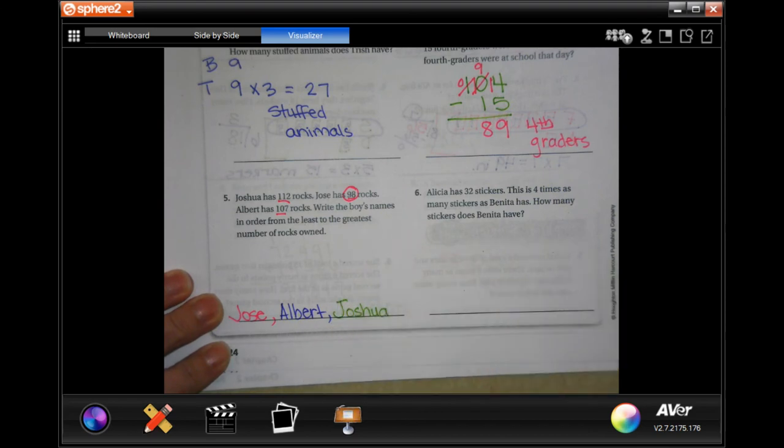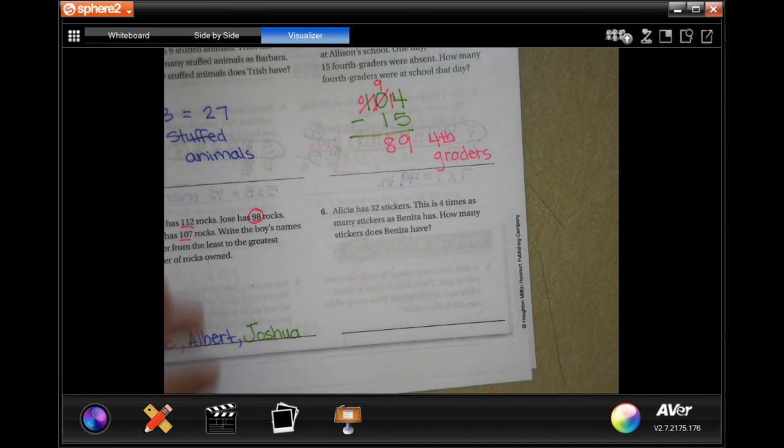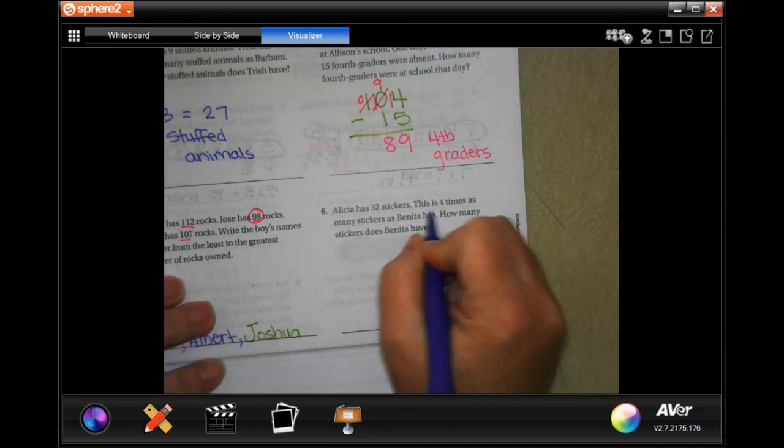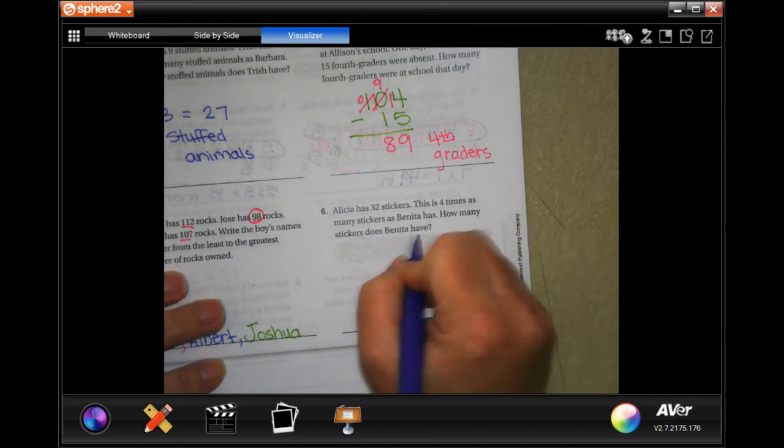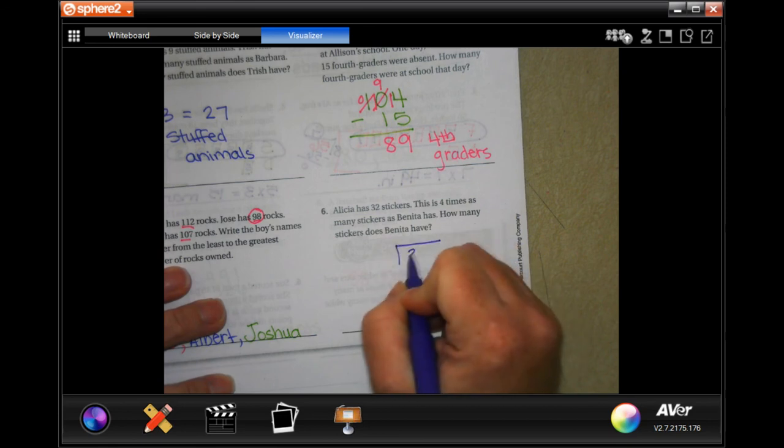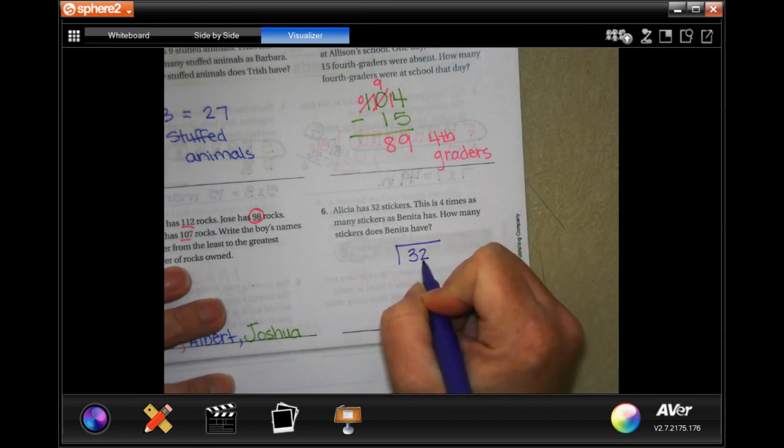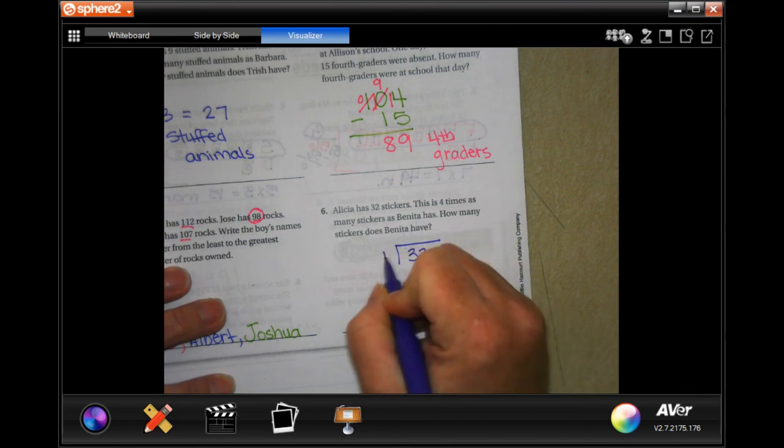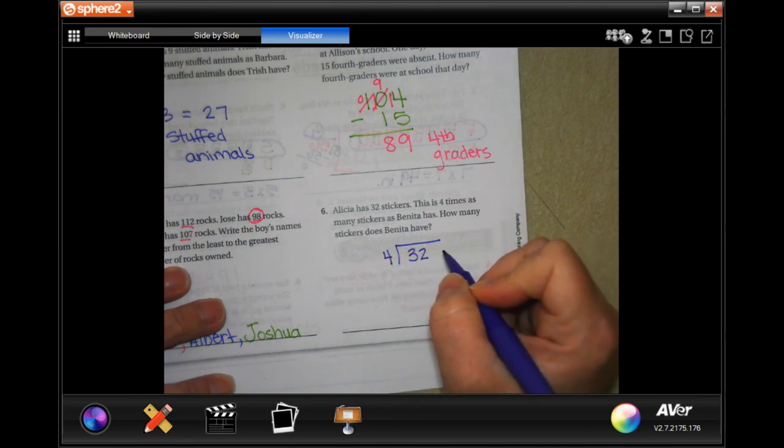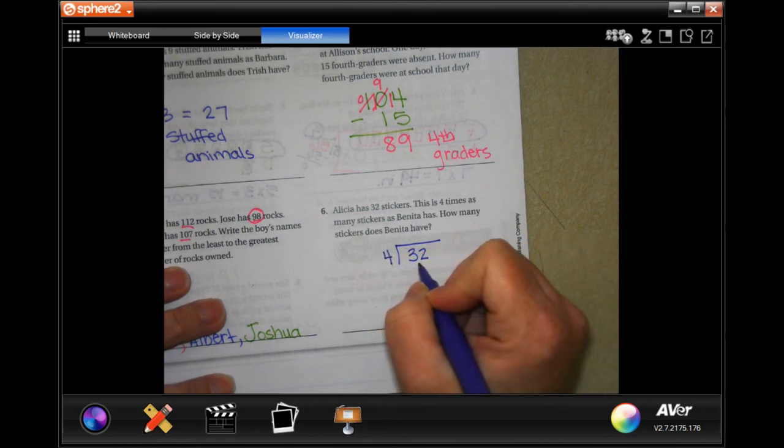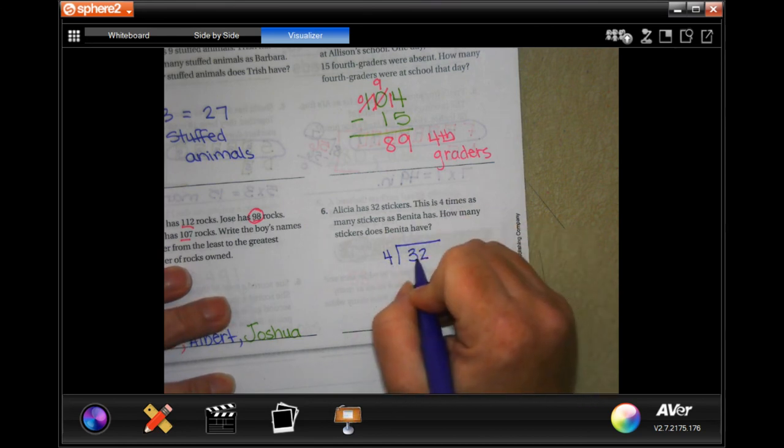Number six says Alicia has 32 stickers. This is four times as many stickers that Vanita has. How many stickers does Vanita have? If Alicia has 32 stickers and that's four times more than what Vanita has, then we need to divide by four to decide how many Vanita has. I know that four times eight is 32, so Vanita has eight stickers.